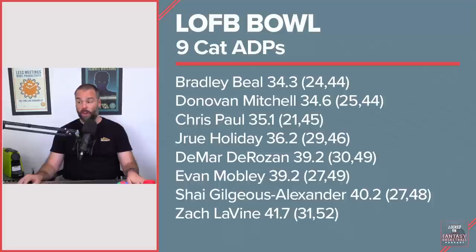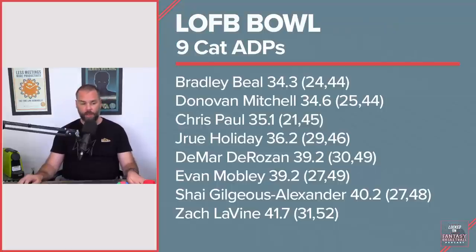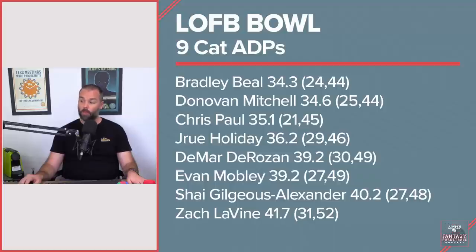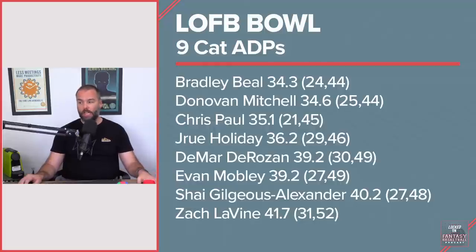Chris Paul at 35.1 — someone took him at 21, which is ballsy. As low as 45, that is amazing value. Drew Holiday had a 36.2 average ADP, end of the third round — went as high as 29 and as low as 46. Anytime Drew Holiday falls into round four, it's really good value.